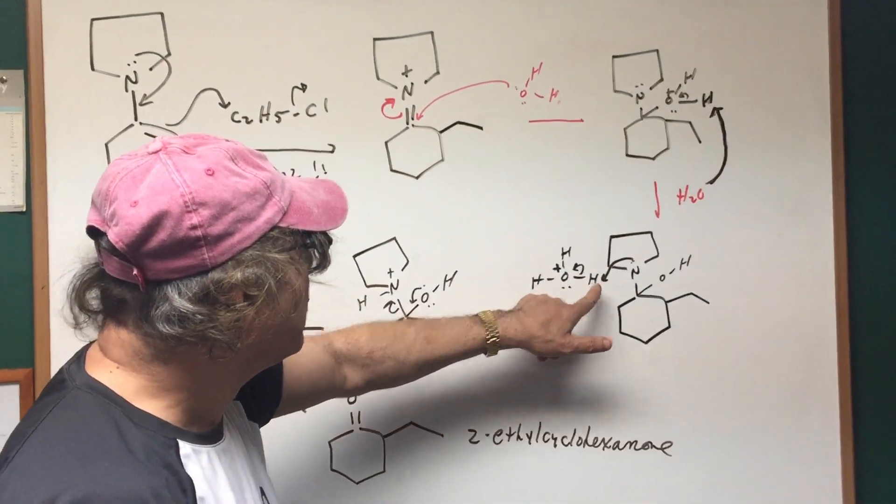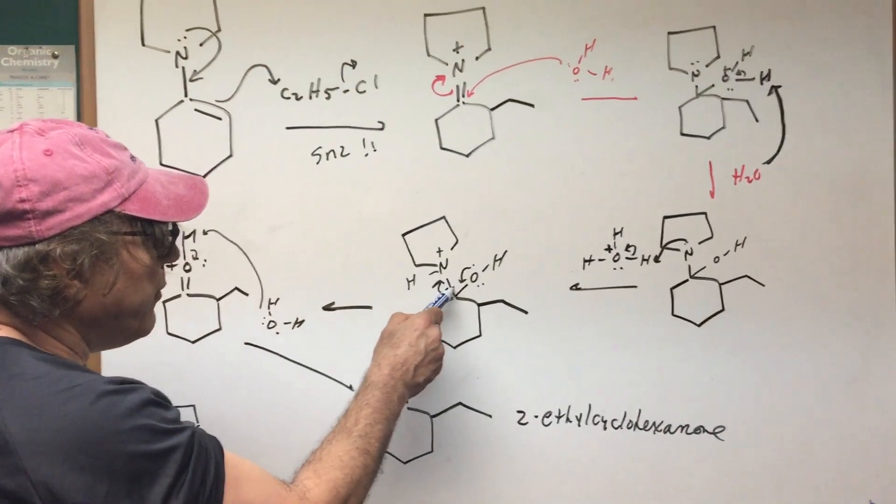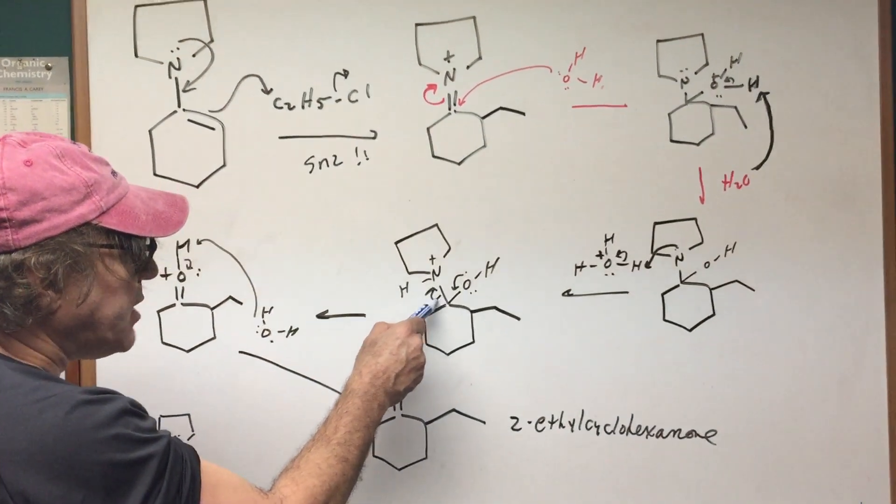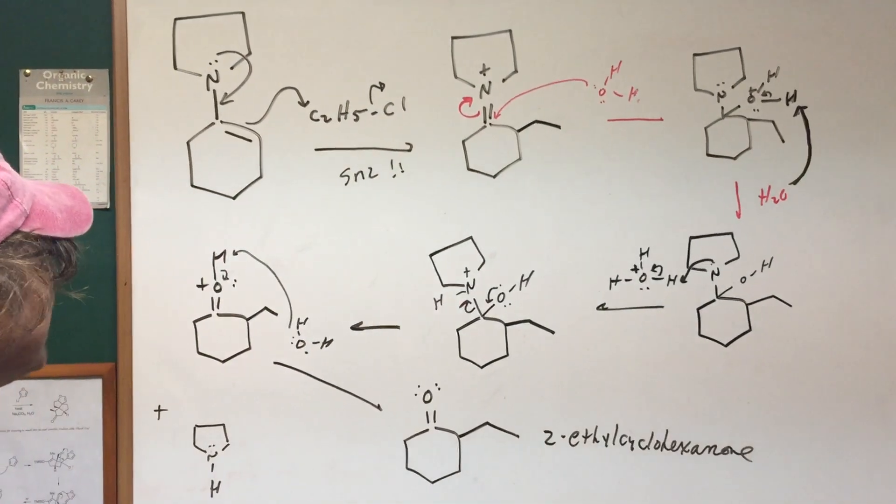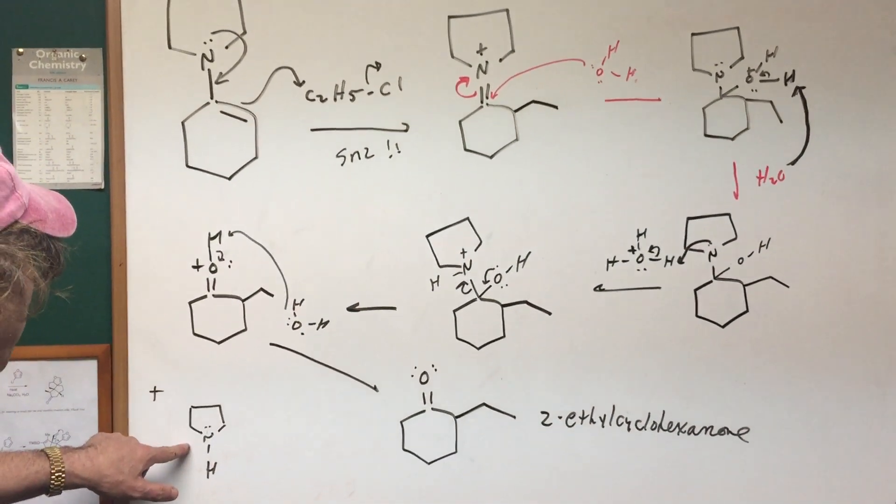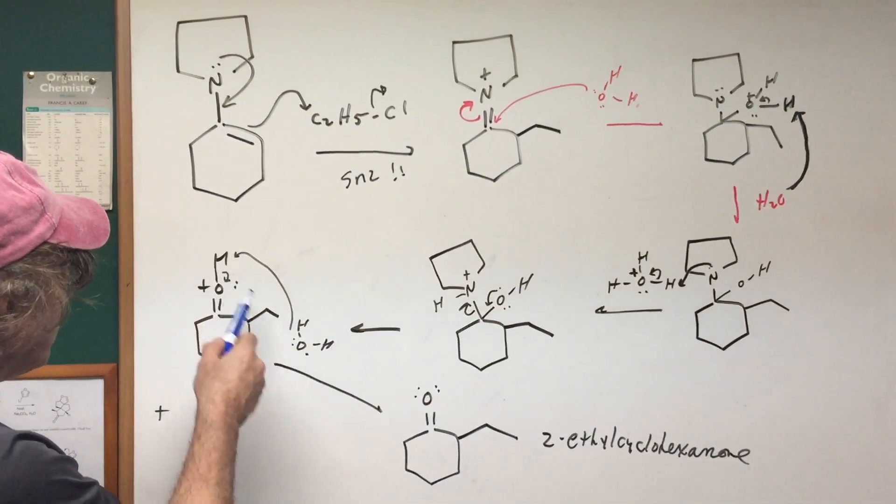If I protonate the nitrogen, I'm here. The nitrogen group is the leaving group, this bond folds down. There's the leaving group, and then finally the last step, a water molecule comes in, deprotonates it.